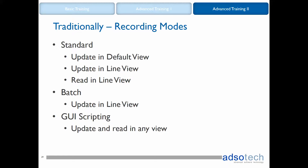Going for the GUI scripting mode means that you can almost forget about the screen views in SAP, as you are able to use either of the views to update and read the long text field. However, GUI scripting mode should be your last option because of its difficulties and slowness in general. Opting for the batch mode, you are able to update the text using the line view in SAP. Using the standard mode, you can do updates in either one of the screen views and also read the text using the line view.